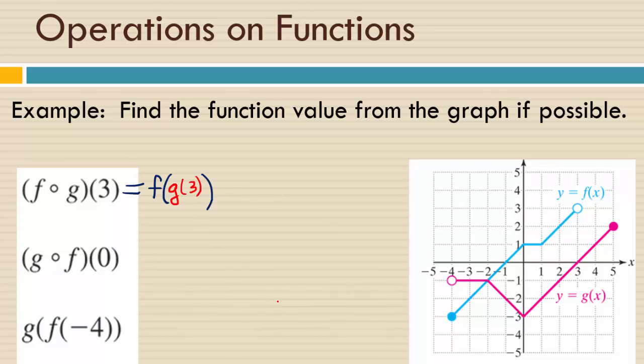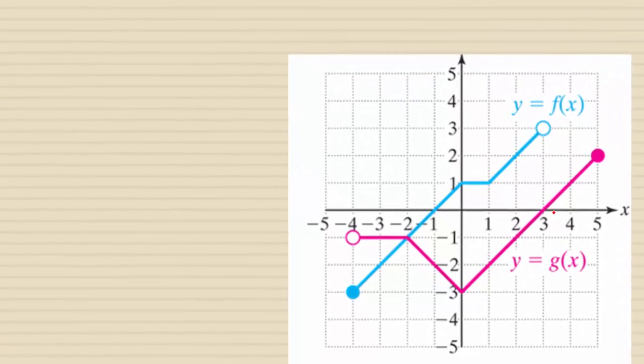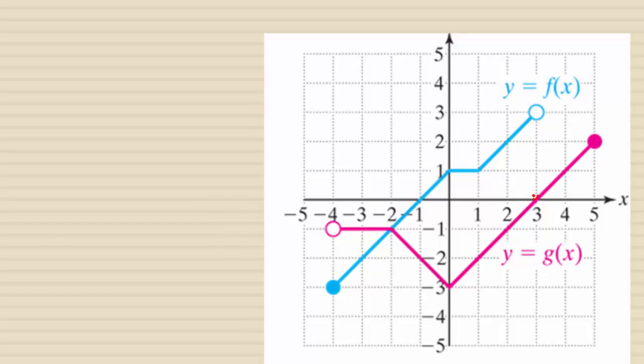Now, going to the graph, what is g of 3? So you go to the pink graph, which is the graph of your g. And what are we being given? The x or the y is 3. Yeah, the x is 3, so the y is 0. We're being referred to this pair of coordinates, 3, 0 here.